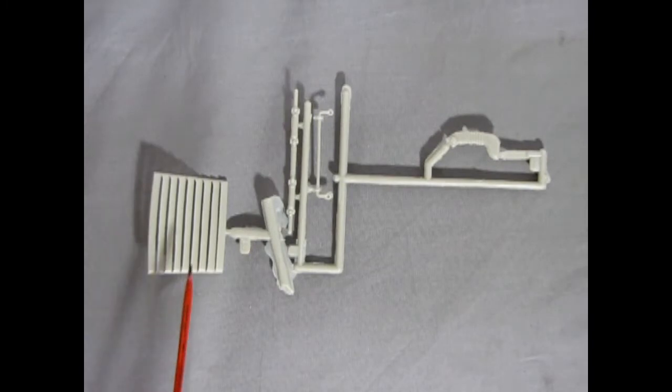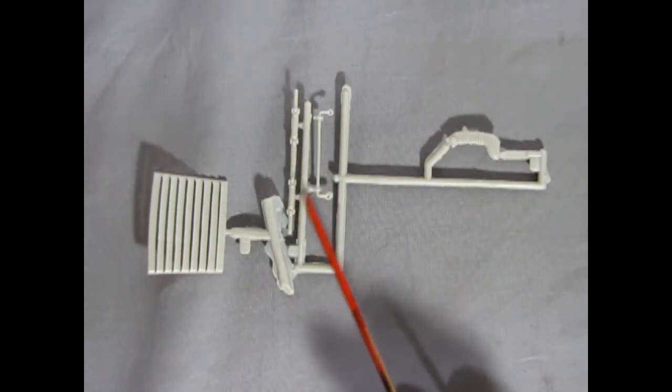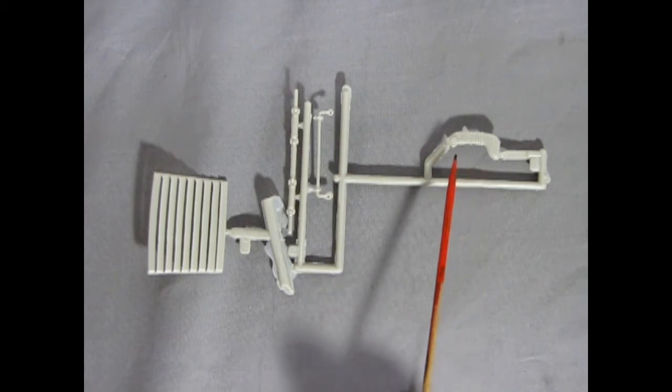Our next parts tree includes the louvers for the rear window, the axle, the anti-sway bar and our air duct.